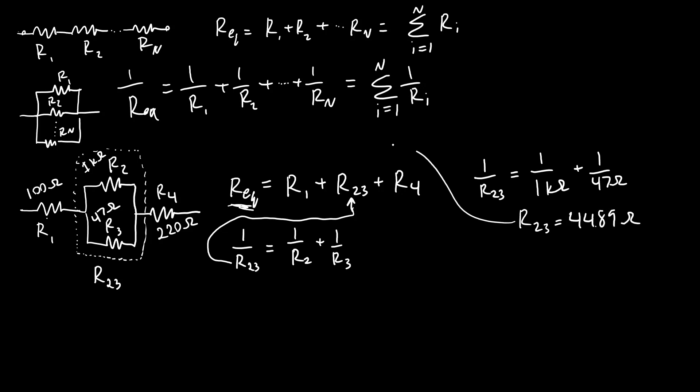And then I plug again that into my equation for the total equivalent resistance. Req equals R1, which is 100 ohms, plus 44.89 ohms, plus R4, which is 220 ohms. And then that gives me the final answer for my equivalent resistance of 364.89 ohms. So a little more work to chug through all the math than when you just have a simple combination of resistors that are only in series or parallel. But again, if you work out the equations in advance like this, then it's very easy to go through and just systematically plug in the numbers to get your final answer.